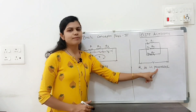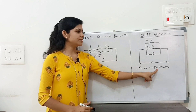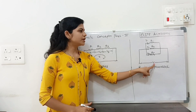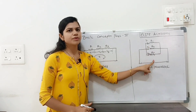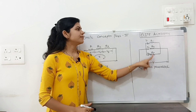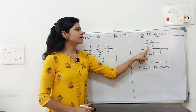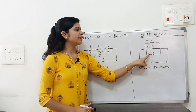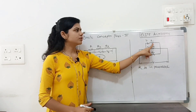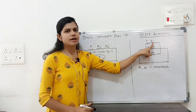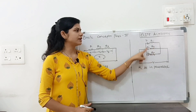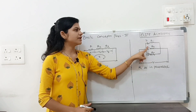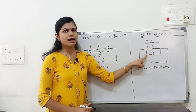Whereas in the case of a parallel condition, the voltage remains the same throughout the circuit, but the current gets divided through the resistances R1, R2, R3 — as I1, I2, I3.